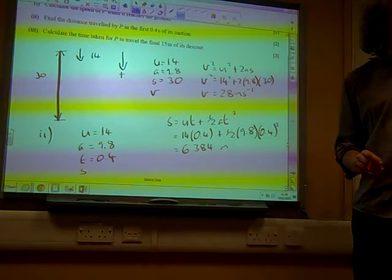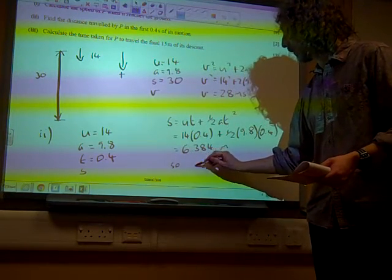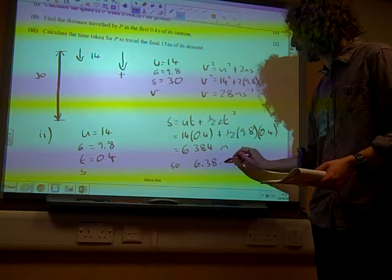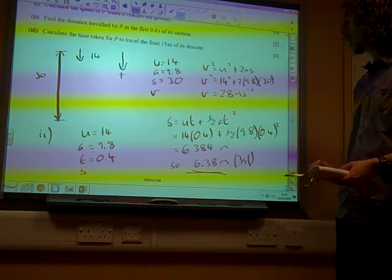And we remember on the front of the paper, it says give answers to three significant figures. So 6.38 metres to three significant figures. There we go.